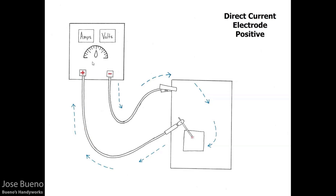With this polarity — direct current electrode positive, or DCEP for short — we need to talk about the heat distribution of the welding arc. When the current is flowing up and into the electrode, this puts the focus of current on the electrode, meaning there is more heat being focused on the electrode. With DCEP, two-thirds of the heat from the welding arc is focused on the electrode, and the remaining one-third of the heat is focused on the work piece.